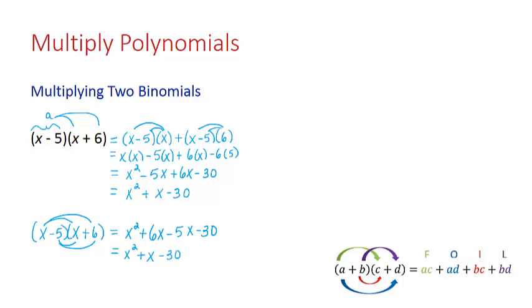So when we multiply two binomials, each term of the first binomial has to be multiplied by each term of the second binomial.